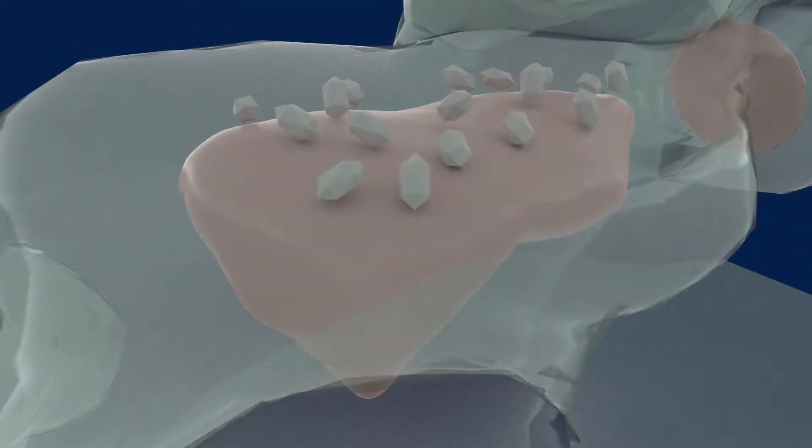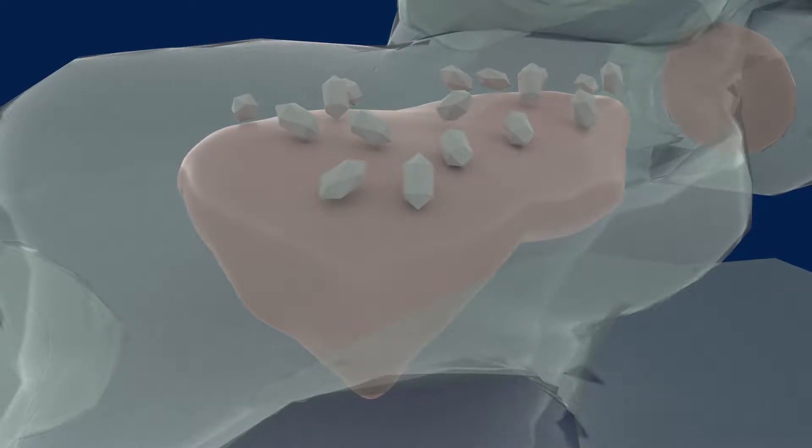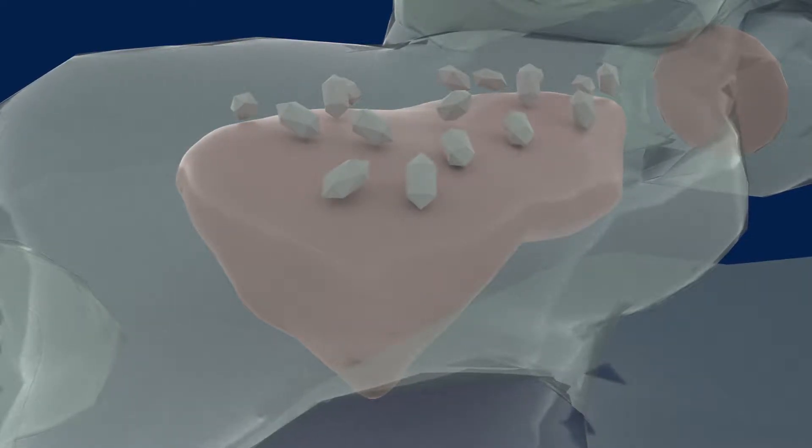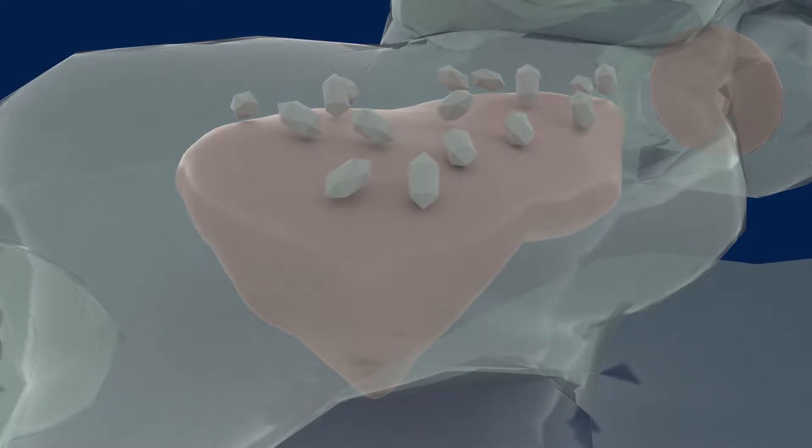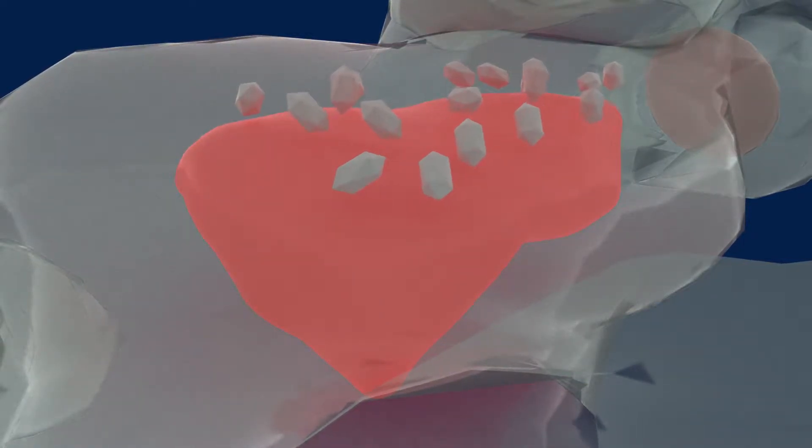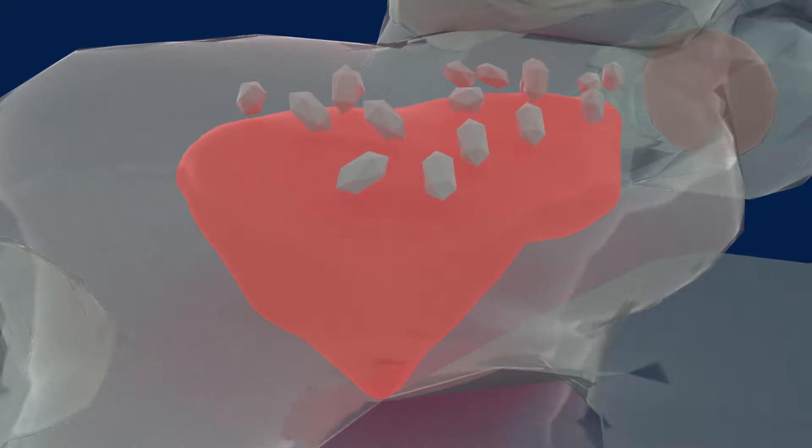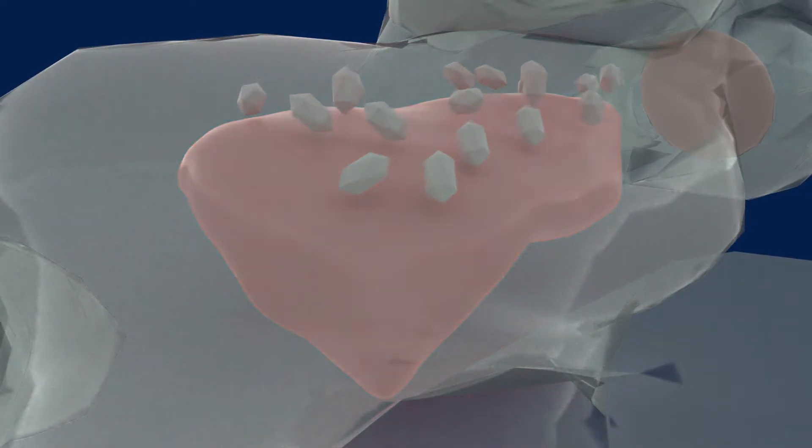In the vestibule, hair cells are arranged on an organ called the utricle, which is aligned in the horizontal plane, and small, dense crystals called otoconia are attached to the hairs. When your head changes orientation or accelerates in a straight line, the heavy otoconia crystals shift their position relative to the utricle, tugging on the hairs and causing the cells to send signals to the brain.